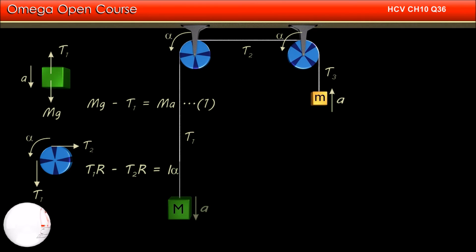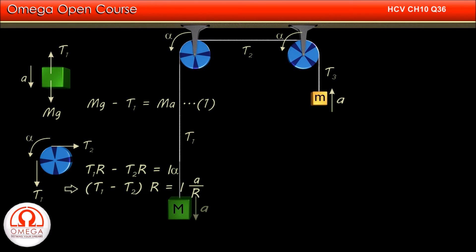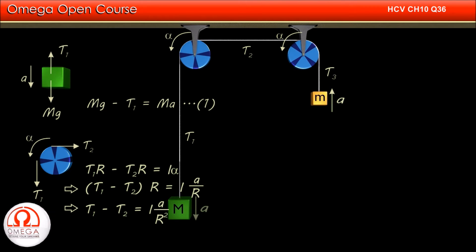Putting alpha equal to a divided by r, we get T1 minus T2 into r is equal to I into a divided by r, or T1 minus T2 is equal to I divided by r squared into a.